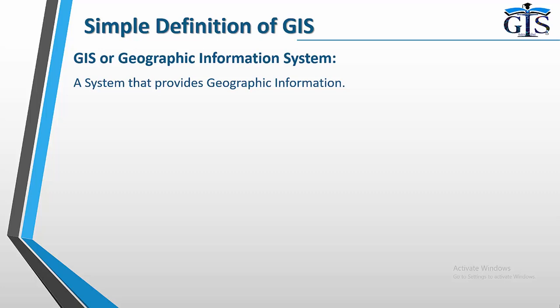GIS, which means Geographic Information System. So the simple definition of GIS is: a system that provides geographic information. This means any kind of system which provides geographic information is known as GIS. It could be hardware, it could be software, it could be survey-related work and many more. So any type of system which provides us location-based or geographic-based information is known as GIS. Now let's see examples of GIS.